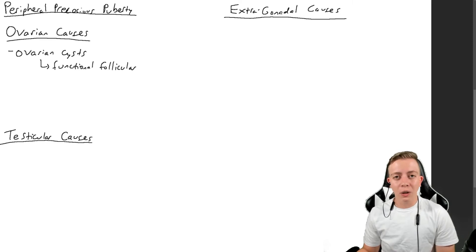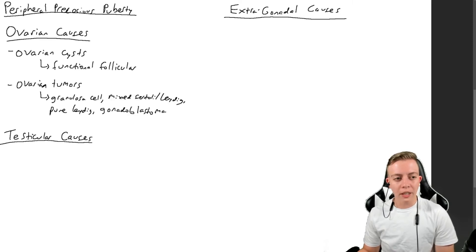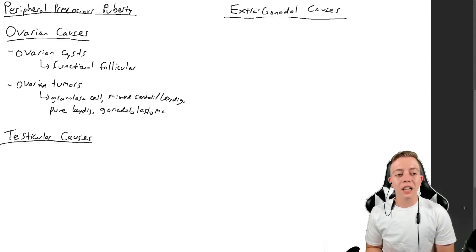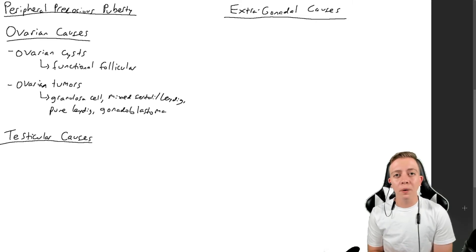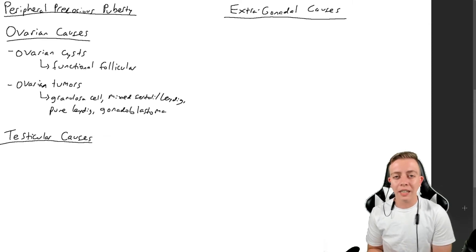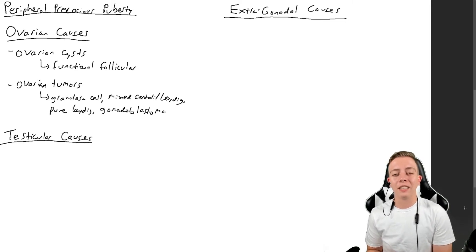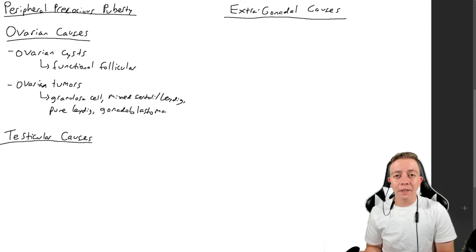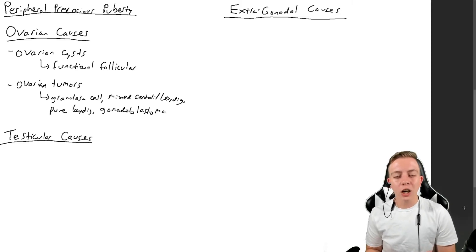A more serious ovarian cause is ovarian tumors. Granulosa cell tumors secrete estrogen, consistent with the normal function of granulosa cells. Additionally, although Sertoli cells and Leydig cells are typically associated with the testes, you can have ovarian tumors made up of Sertoli cells and Leydig cells — sometimes mixed together as a mixed Sertoli-Leydig cell tumor — and these may produce testosterone.